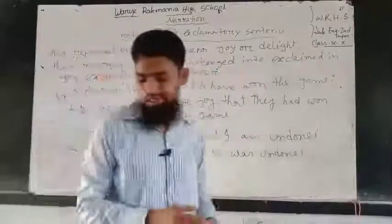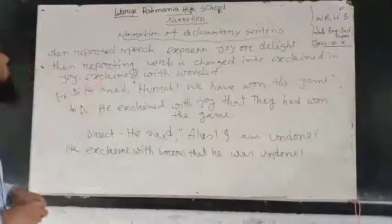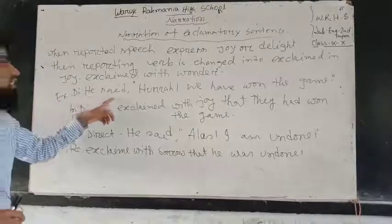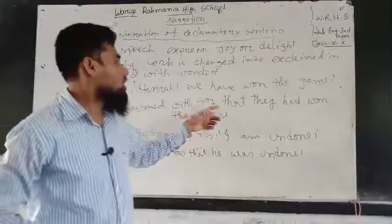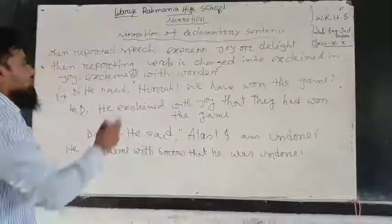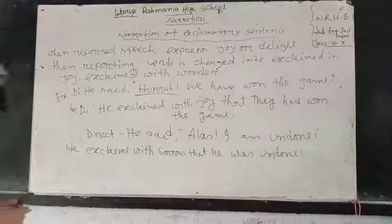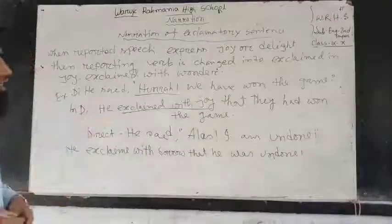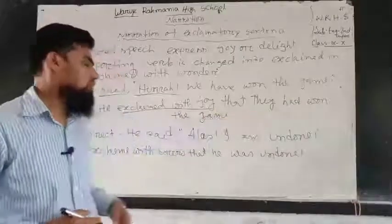Narration of Exclamatory Sentence. When the reported speech expresses joy or delight, the reporting verb is changed into 'exclaimed with joy'. Example — Direct: He said, 'Hooray, we have won the game.' Indirect: He exclaimed with joy that they had won the game. Because it expresses delight, reporting verb 'said' changes into 'exclaimed with joy', and 'that' is used as a connector.